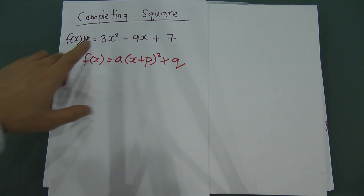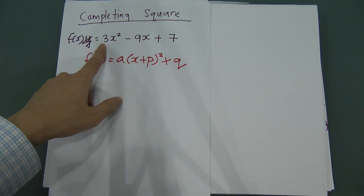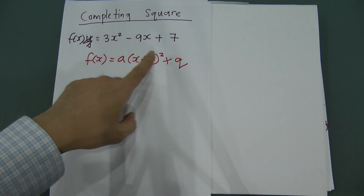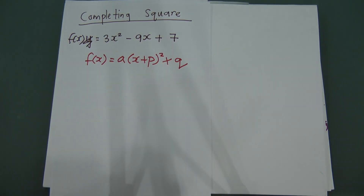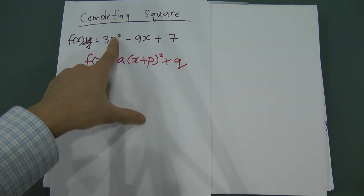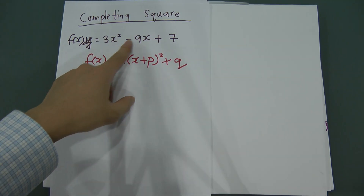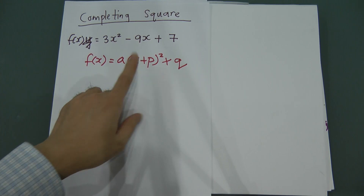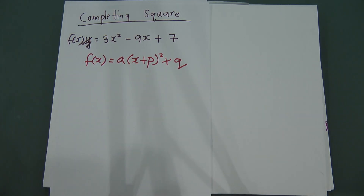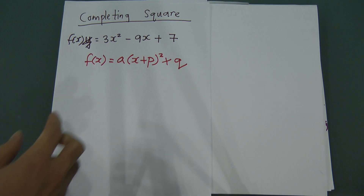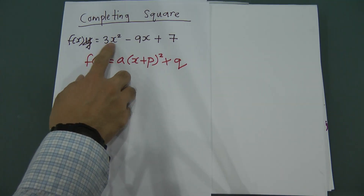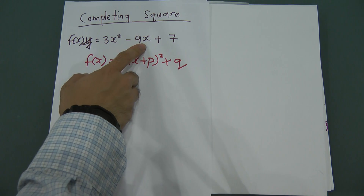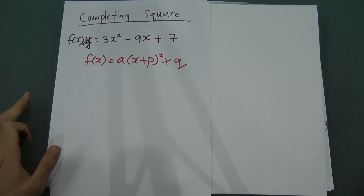In order to change to this form, one very important thing: the coefficient of x² here must be 1. So what I need to do is factorize out 3 for both of these terms — I factorize out 3 for this one and this one.